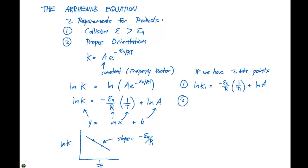And data point number two is going to be the ln of K2, which will equal negative Ea divided by R times 1 over T2 plus the ln of A.